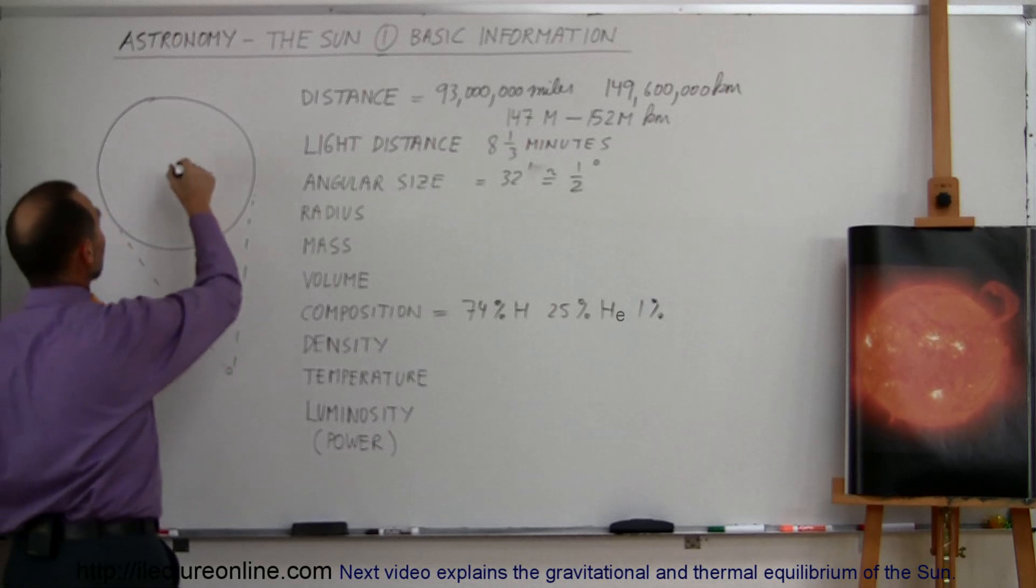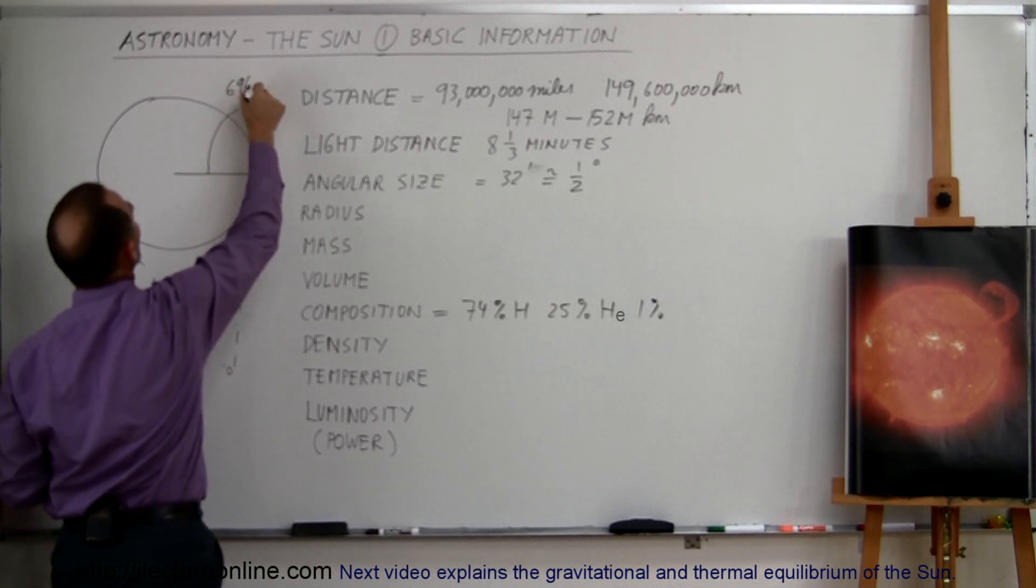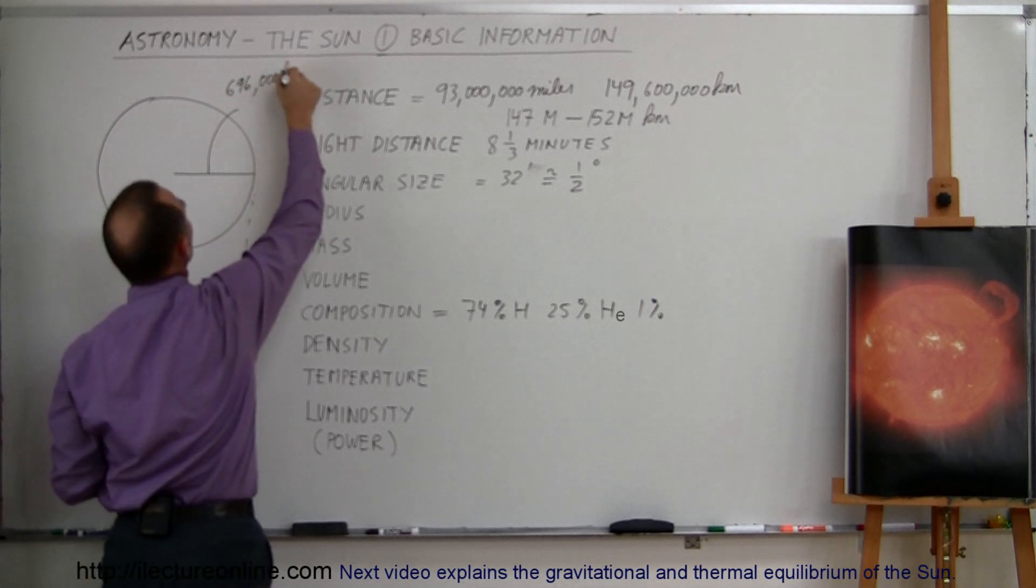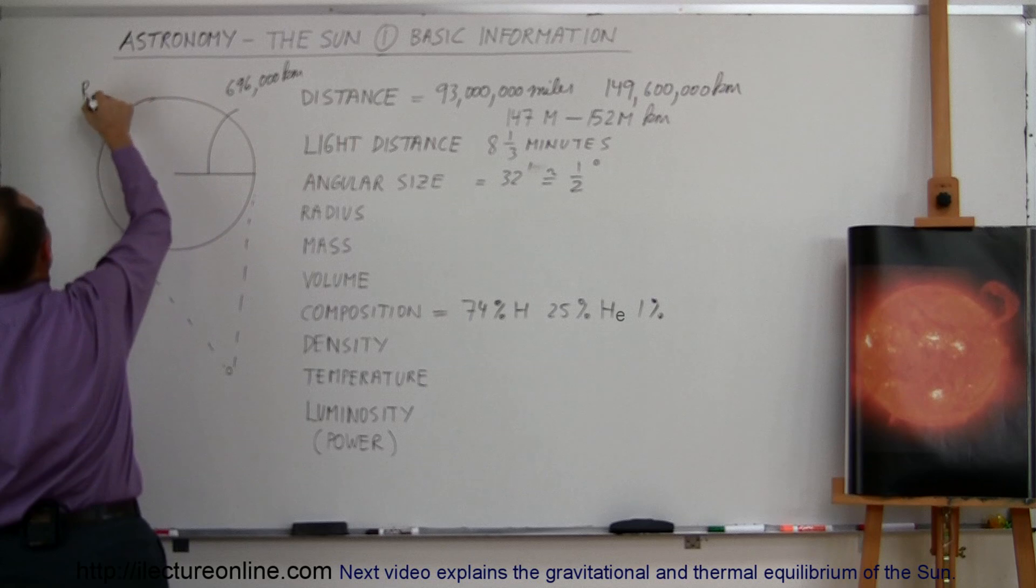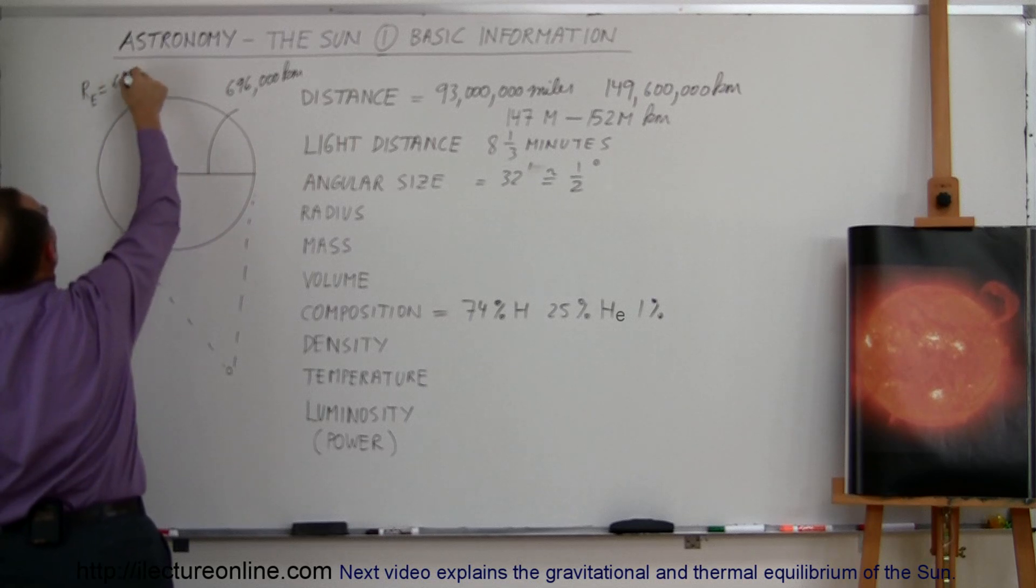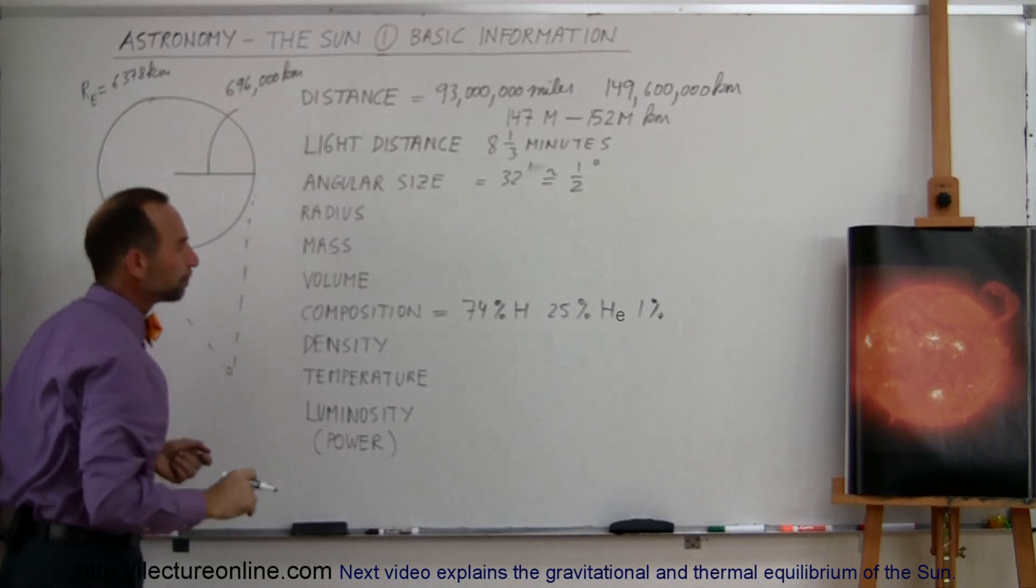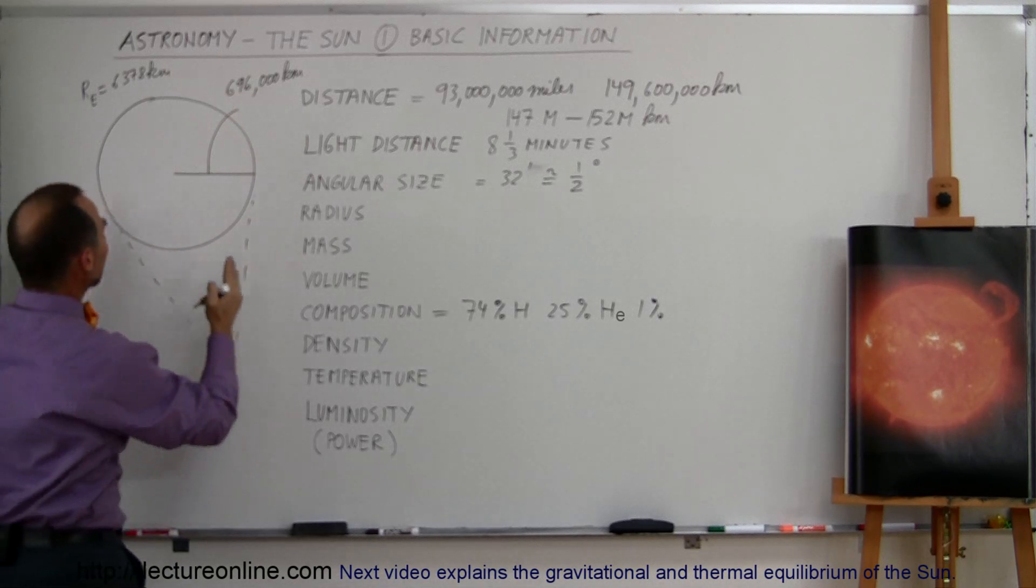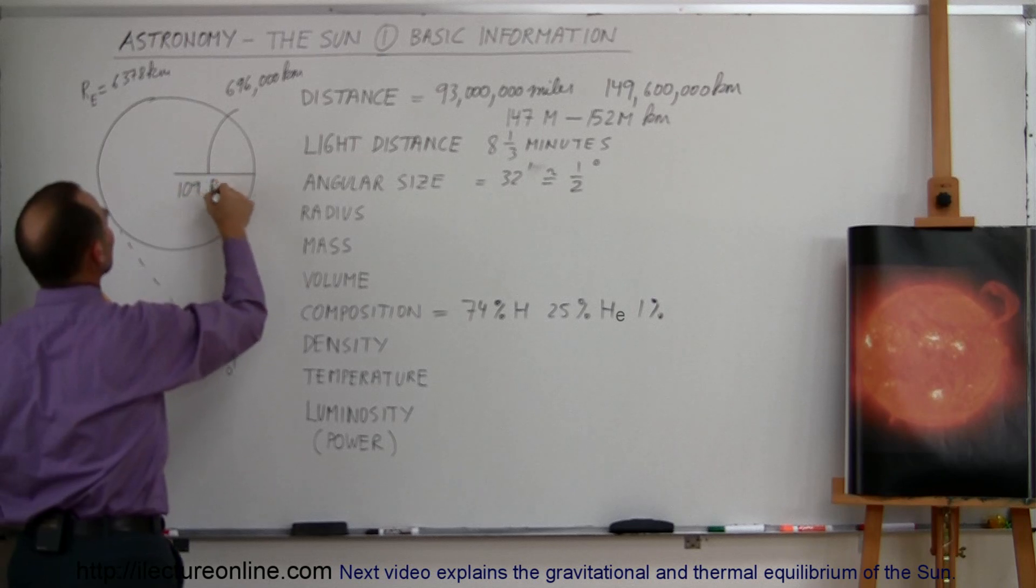Radius-wise, how big is the Sun in radius? Well, the radius is about 696,000 kilometers. That's quite big, because if you compare that to the Earth, the radius of the Earth is about 6,378 kilometers. So you can see the vast difference between those two. It turns out the radius of the Sun is about 109 times the radius of the Earth.